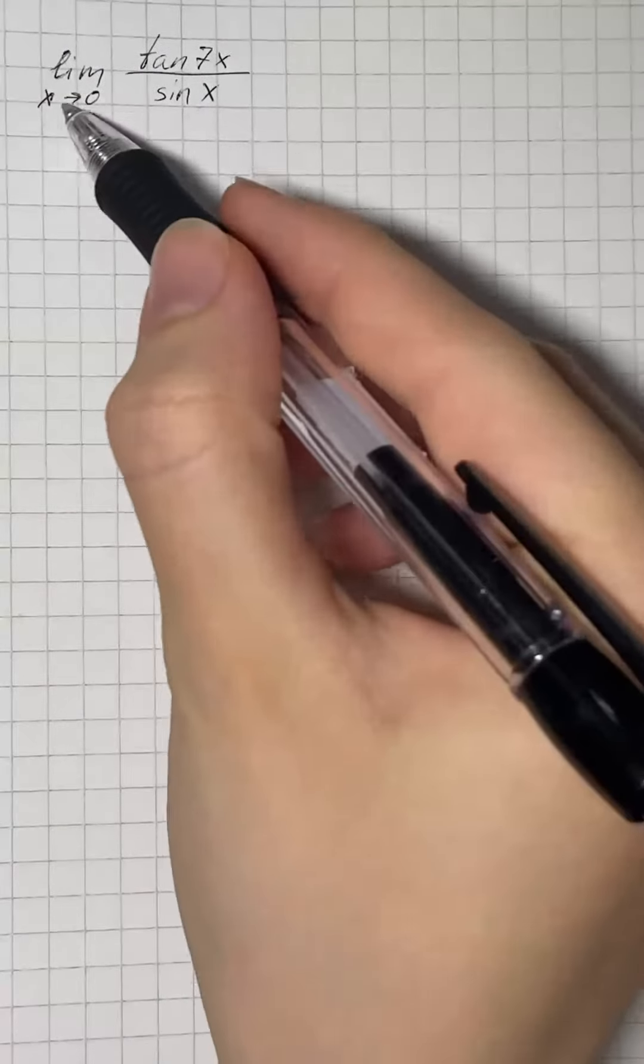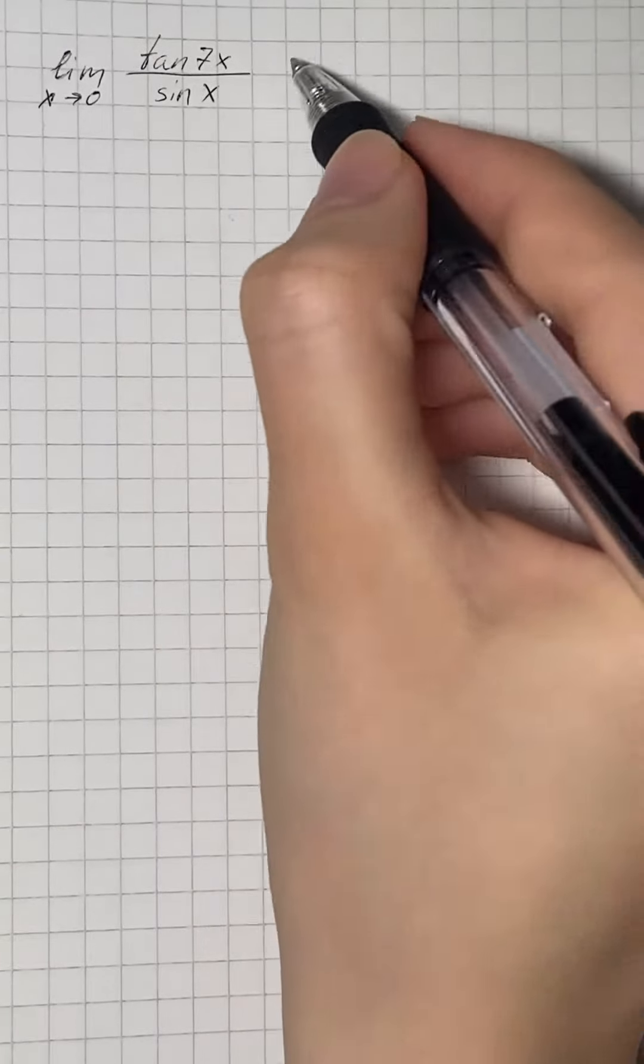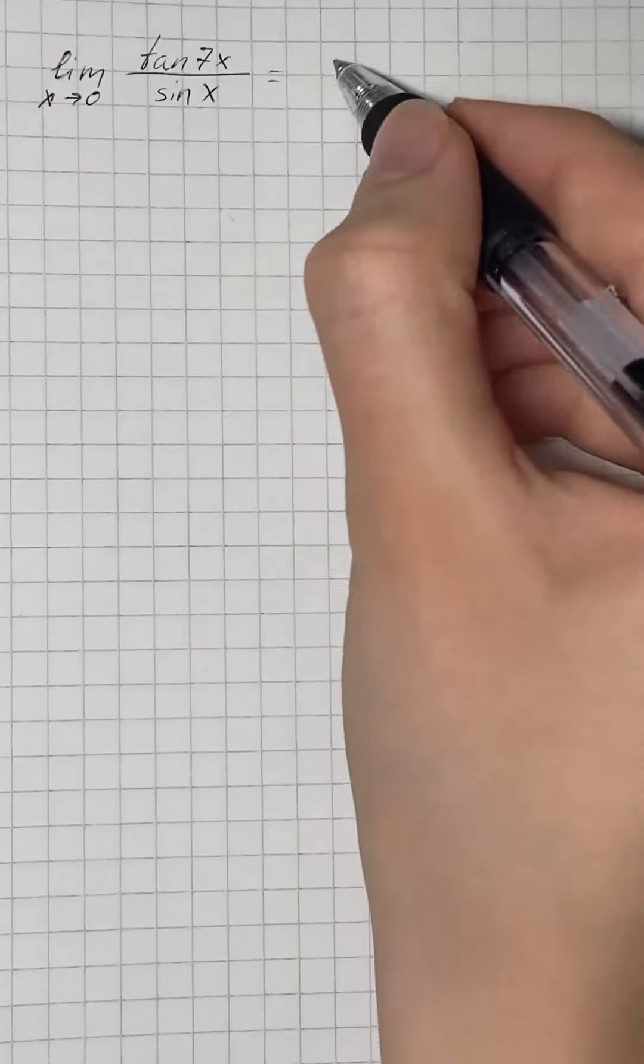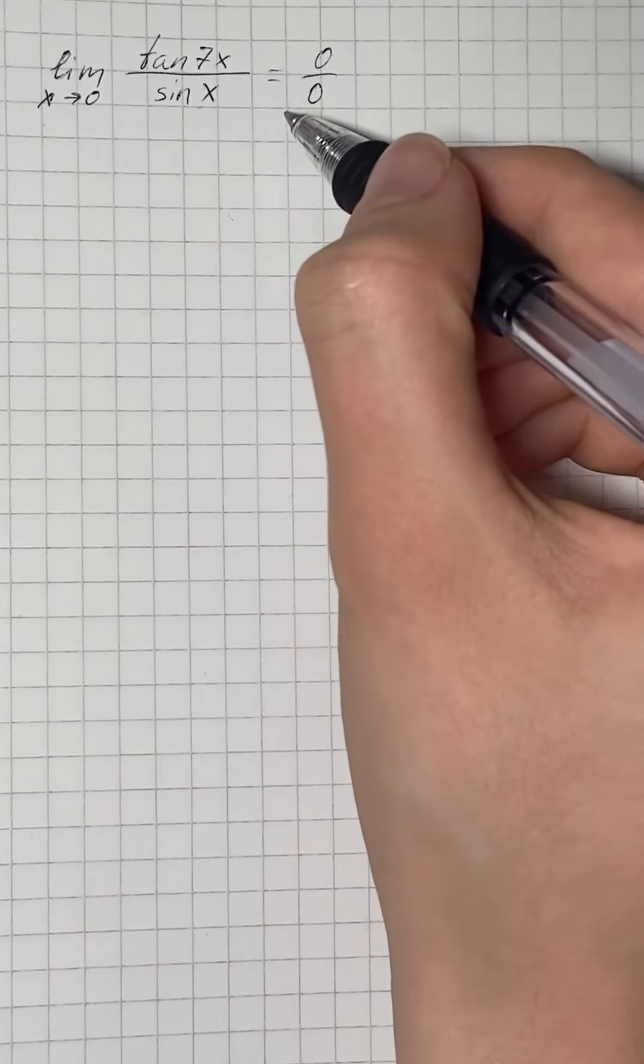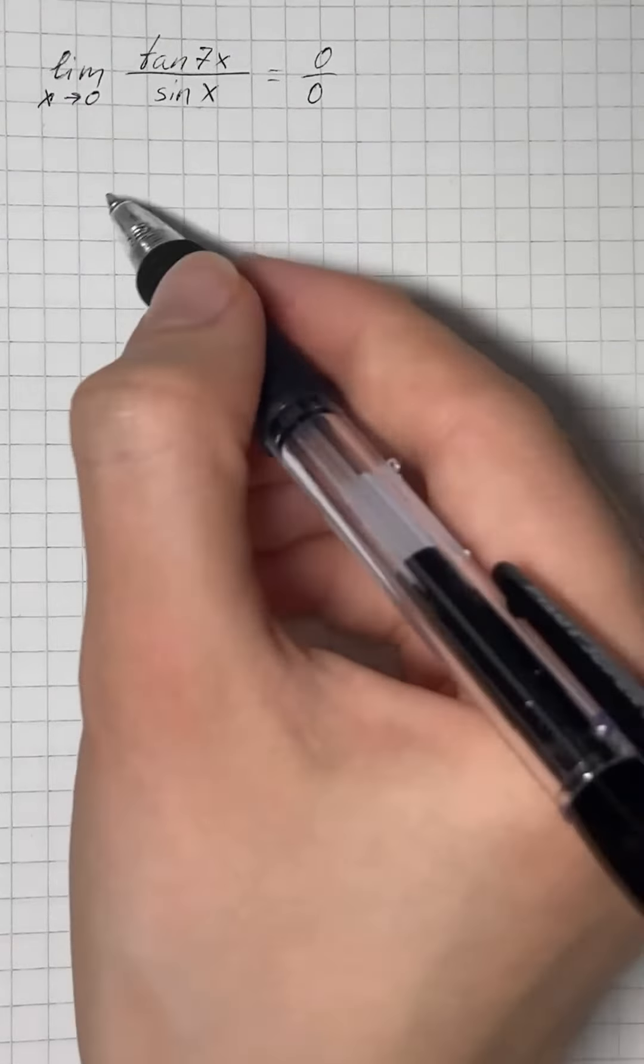If we put the value of x into the given function, we get that the given limit is in the indeterminate form of 0 over 0. So here we're going to apply L'Hôpital's rule.